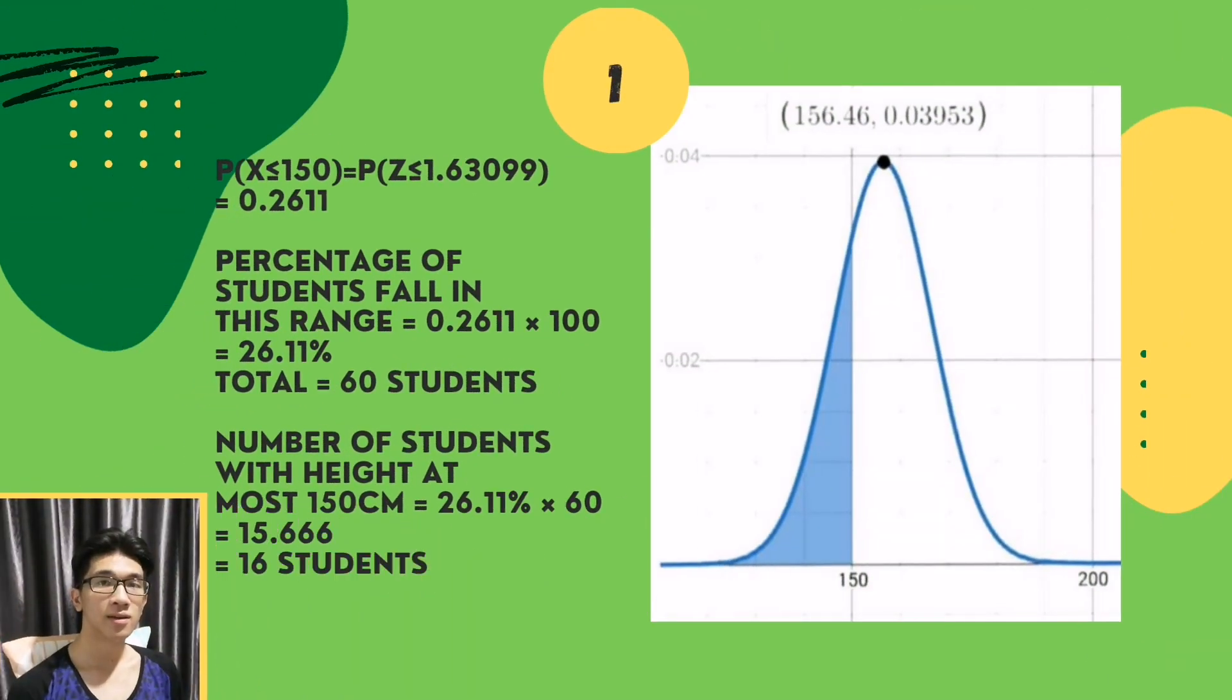Range 1: Find the probability of Form 1 students with a height of 150 cm. If x is 150, then the z-score would be negative 0.63099. The value of standard normal distribution is 0.2611. Multiply it with 100 to get 26.11%. Then multiply the percentage by the total number of students to get 15.666, which rounds off to 16 students.